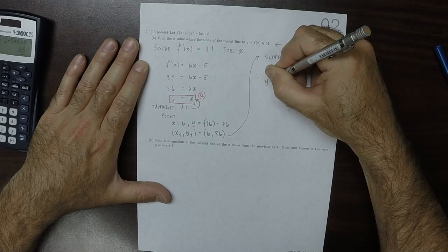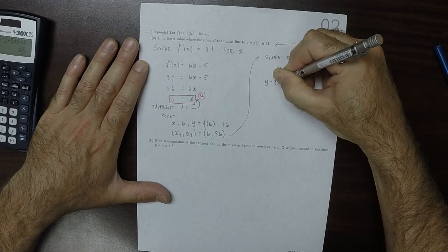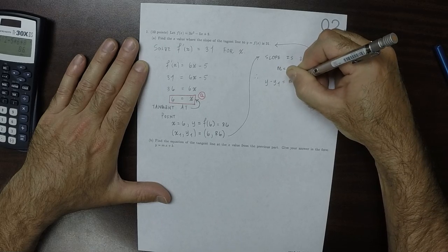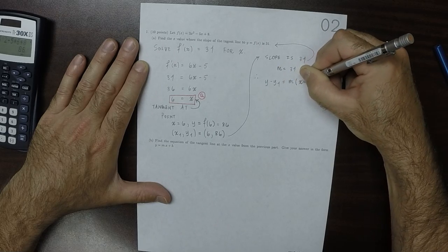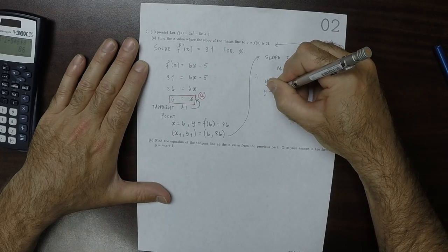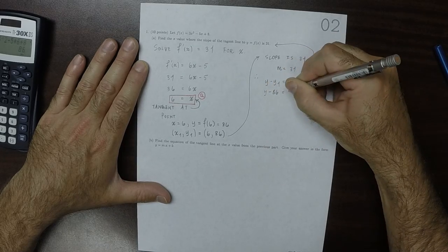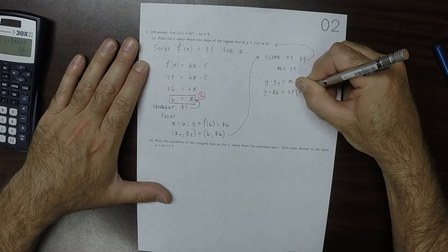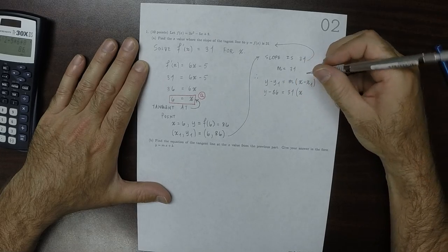Therefore now it's just a matter of plugging in: y minus y1 is m multiplied by x minus x1. So y minus 86 is 31 multiplied by x minus 6.